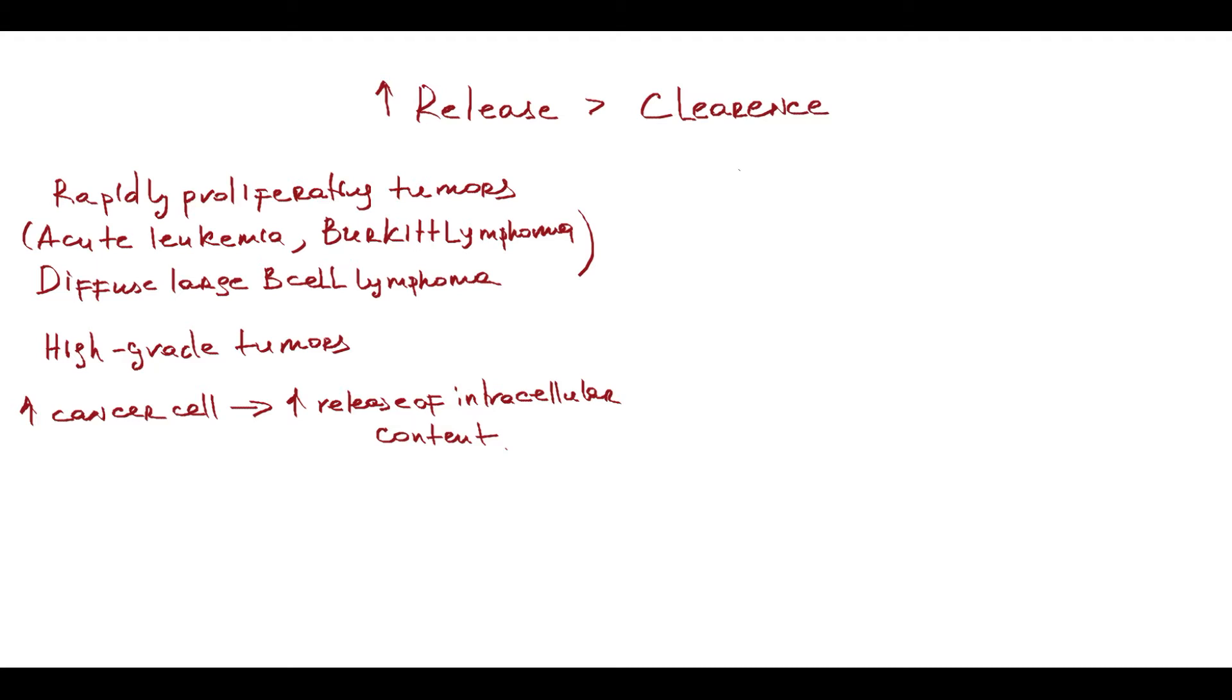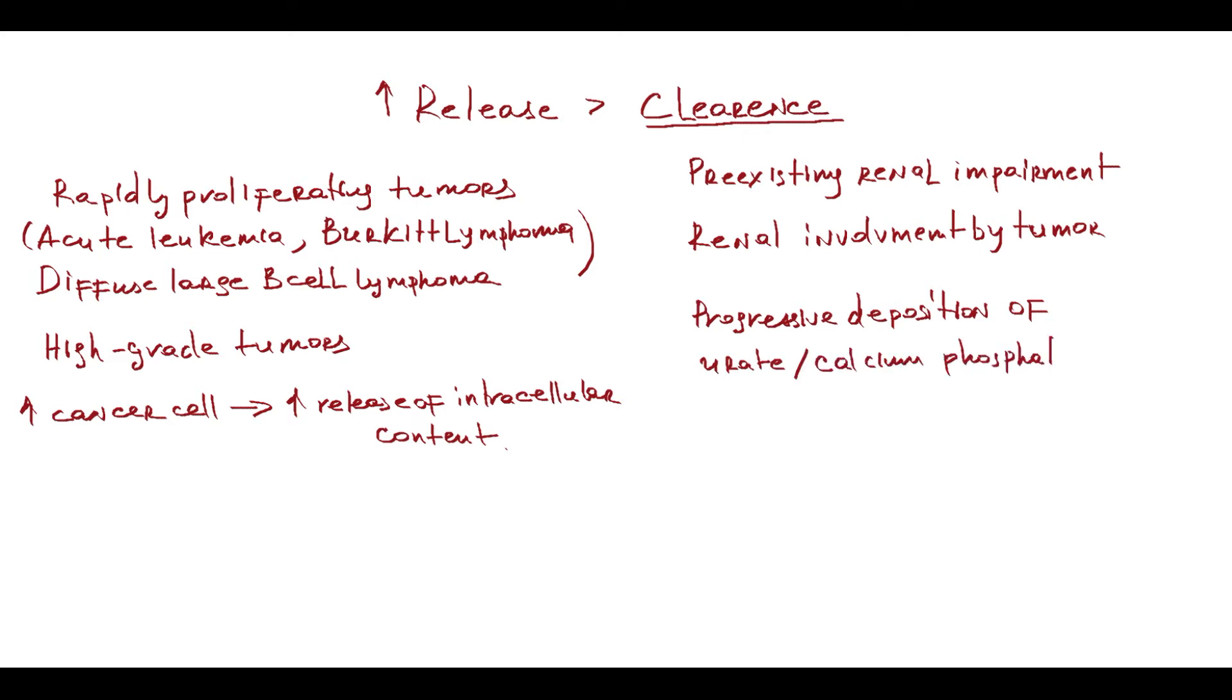But the most important role in tumor lysis syndrome is played by renal clearance mechanisms. If the kidney is able to excrete all of this intracellular content, clinical tumor lysis syndrome is unlikely to develop. Everything depends on the ability of the kidney to excrete all of this released intracellular content. That's why patients with pre-existing renal impairment or renal involvement by tumor have higher risk of developing tumor lysis syndrome. But even initially healthy kidneys can't prevent tumor lysis syndrome, because progressive deposition of urate and calcium phosphate crystals leads to progressive decrease in kidney function.